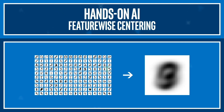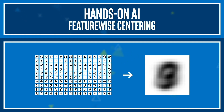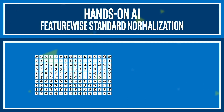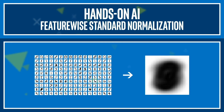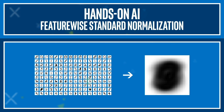To do this easily and to understand what it looks like, we compute the mean image from our data set and subtract it from each image. While the mean image doesn't look great to us, it does show the most common features of our data set. Since we already calculated the mean image of the data set, we can also calculate the standard deviation for feature-wise standard normalization. This value is then divided from every image and pixel in our data set.